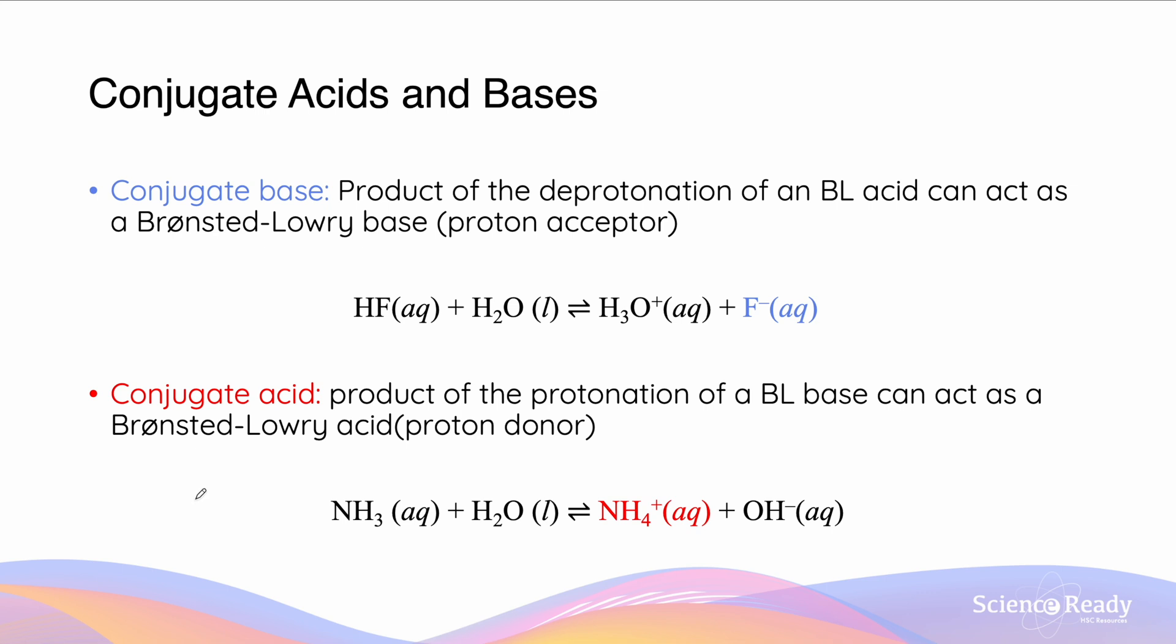Just revising our understanding of conjugate acids and bases. So a conjugate base is a product of deprotonating a Bronsted-Lowry acid and it can act as a Bronsted-Lowry base or a proton acceptor. So an example is F- which has been formed from the deprotonation of the HF.